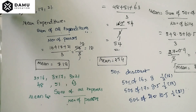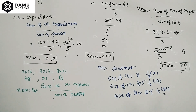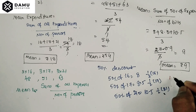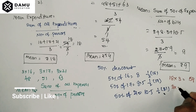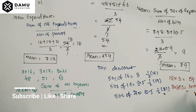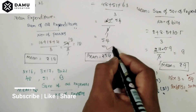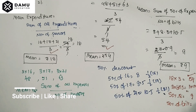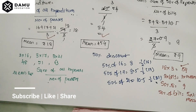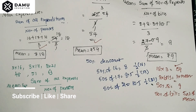Now let's observe the relation. The original mean was 18 rupees; multiplying bills by 3 gives 18 into 3 equals 54, so the mean also multiplies by 3. And 50% of 18 equals 9, so 50% discount on all bills gives 50% of the mean. If you increase or decrease all values, the mean scales by the same factor. Thanks for watching, please subscribe.